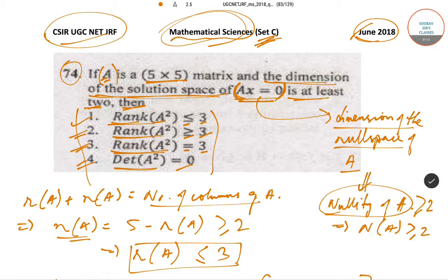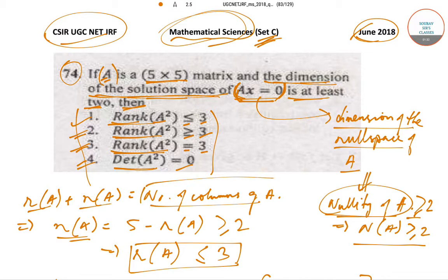Since the nullity of A is at least 2, we have nullity(A) ≥ 2, i.e., n(A) ≥ 2. By the Rank-Nullity Theorem, rank(A) + nullity(A) equals the number of columns of A.